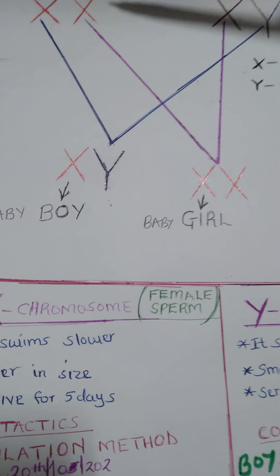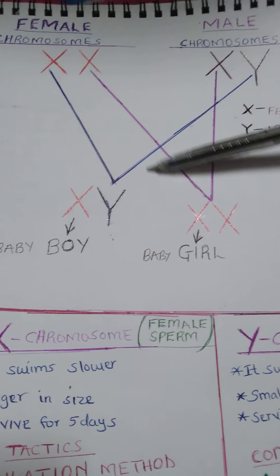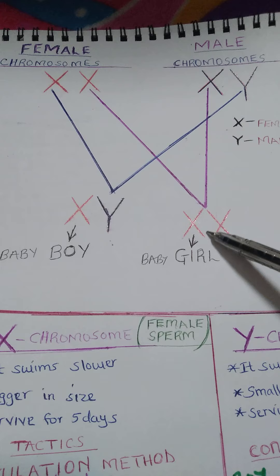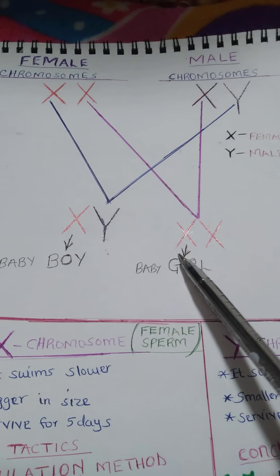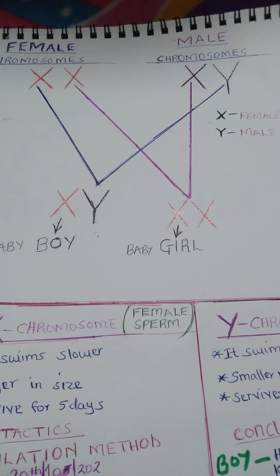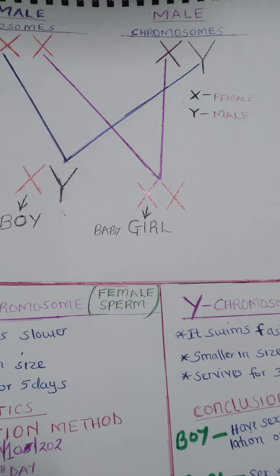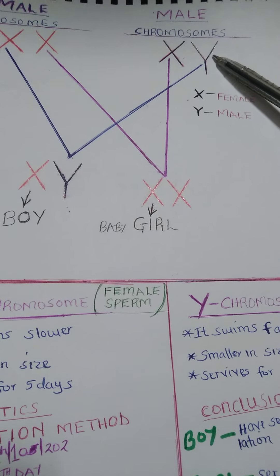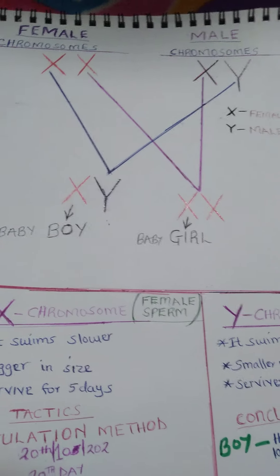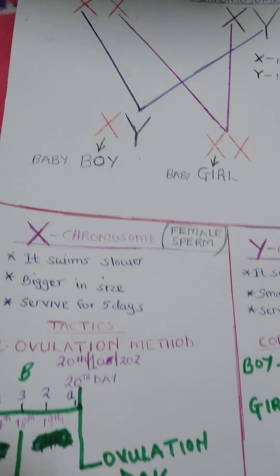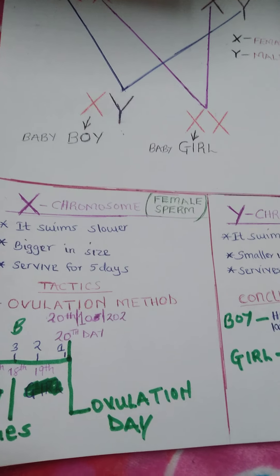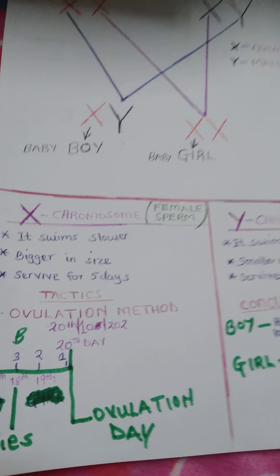When a woman produces the X chromosome and a man produces the X chromosome again, they make XX, which is a baby girl. So, the sex determination is done by a man, because a man has the Y chromosomes which produce a baby boy. Getting a baby boy or a baby girl depends on some tactics to follow in order to conceive a baby boy or a girl.